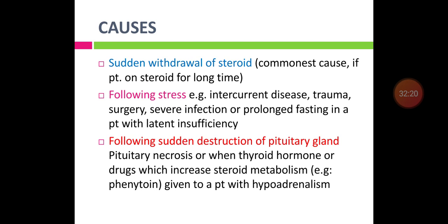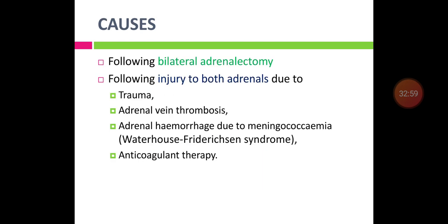Additional causes of adrenal crisis include sudden destruction of the pituitary gland (pituitary apoplexy) as in Sheehan's syndrome, pituitary adenoma hemorrhage, or drugs that increase steroid metabolism given to patients with hypoadrenalism. Bilateral adrenalectomy, injury to both adrenal glands, adrenal vein thrombosis, adrenal hemorrhage due to meningococcal septicemia (Waterhouse-Friderichsen syndrome), or overdose of anticoagulation therapy leading to adrenal hemorrhage can also cause acute adrenal insufficiency.